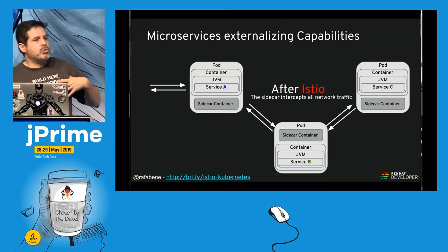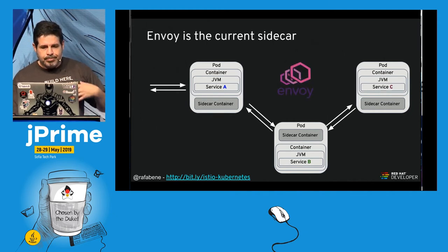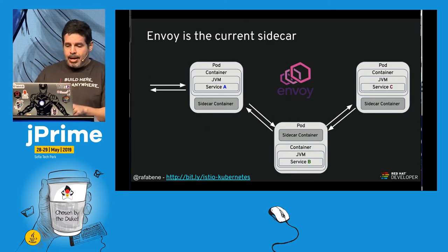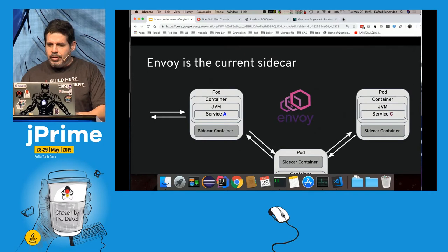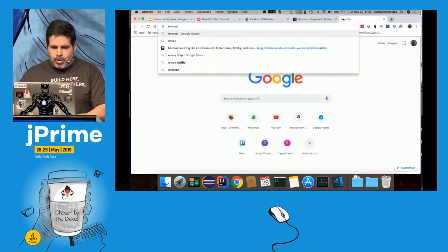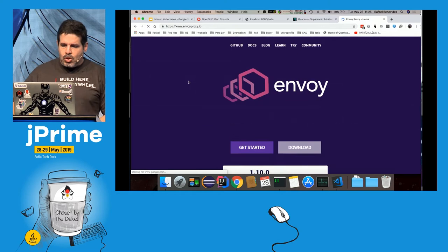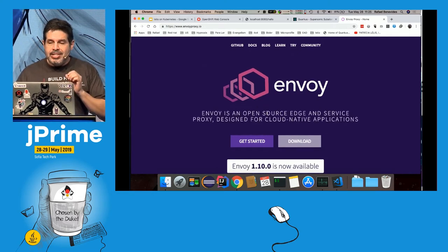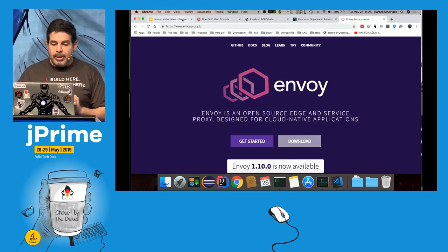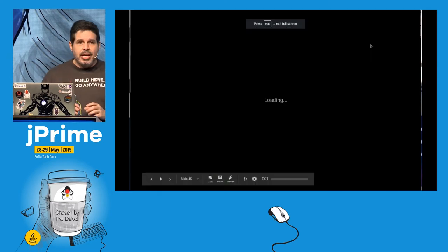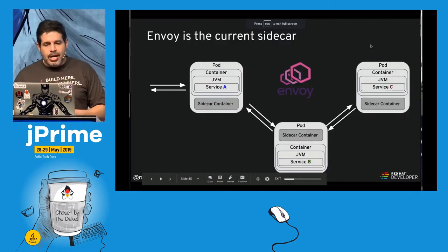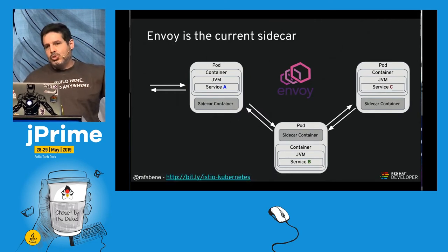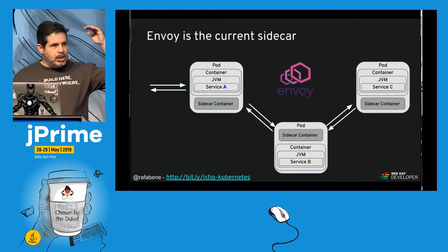The iptables rules get traffic processed inside the sidecar container, which then sends the information to the application. This sidecar container has a proxy called Envoy. Envoy is an open-source edge and service proxy designed for cloud-native applications — fast, lightweight, supporting HTTP/1, HTTP/2, gRPC, and TCP for everything else.